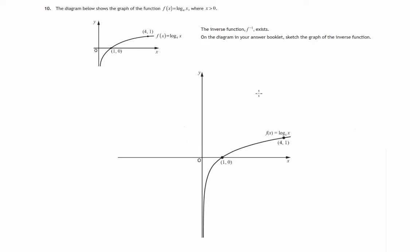Now the way to do that is to reflect the graph in the line y equals x. So we're swapping the roles of x and y. So there's the line y equals x and we'll use that as a mirror line, a symmetry line.